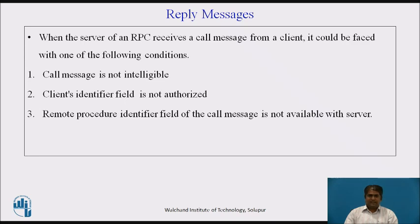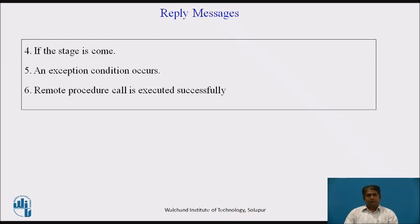The third condition is the server finds that the remote program version or procedure number specified in the remote procedure identifier field of the call message is not available. Again, the server will return an unsuccessful reply without attempting to execute the procedure. The fourth condition is when an attempt is made to execute the remote procedure, but it may happen that the procedure is not able to decode the supplied arguments due to an incompatible RPC interface being used by the client and server, or an exception condition such as division by zero occurs while executing the specified remote procedure. The last condition is that the specified remote procedure is executed successfully.